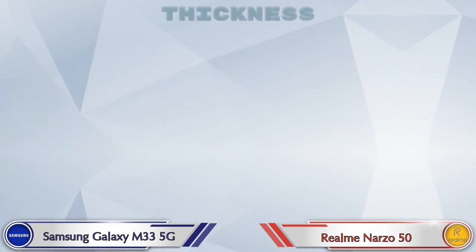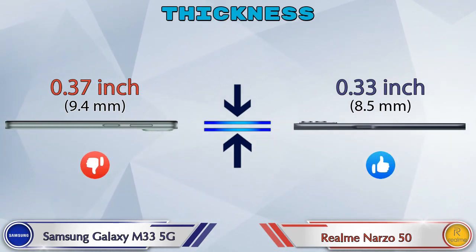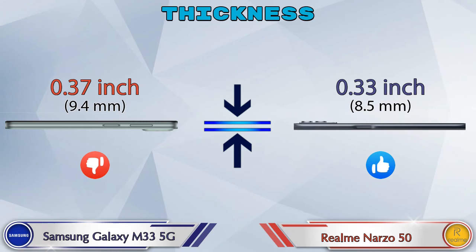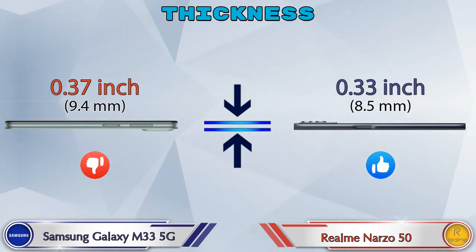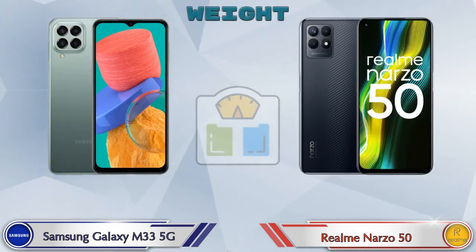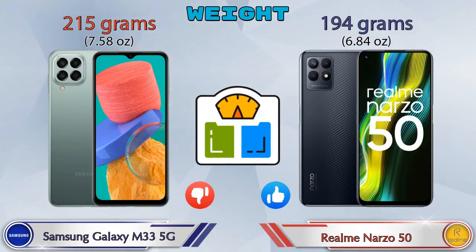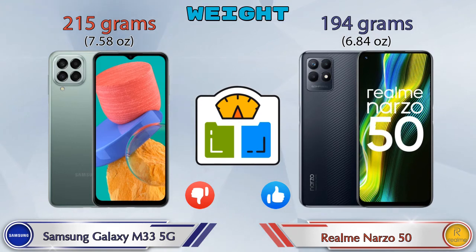If we talk about thickness, the Galaxy M33 5G is 0.37 inches and the Narzo 50 is 0.33 inches. Talking about weight, the Galaxy M33 5G weighs 215 grams and the Narzo 50 weighs 194 grams.